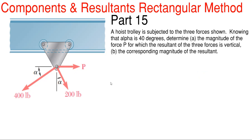So what we have here is a hoist trolley subjected to three forces: P, 200, and 400 pounds. Knowing that alpha is 40 degrees, we need to determine the magnitude of force P for which the resultant of the three forces is vertical, and then the corresponding magnitude of that resultant force.